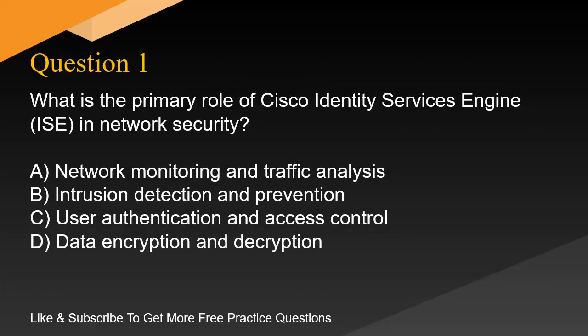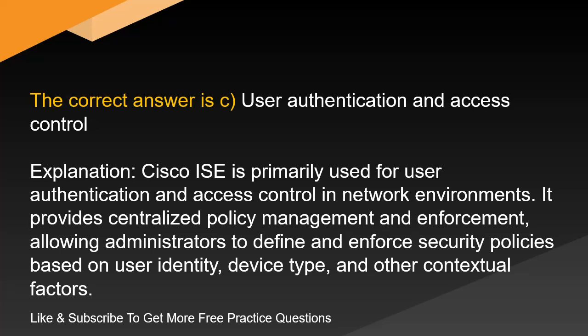Question 1. What is the primary role of Cisco Identity Services Engine in network security? A. Network monitoring and traffic analysis. B. Intrusion detection and prevention. C. User authentication and access control. D. Data encryption and decryption. The correct answer is C. User authentication and access control.